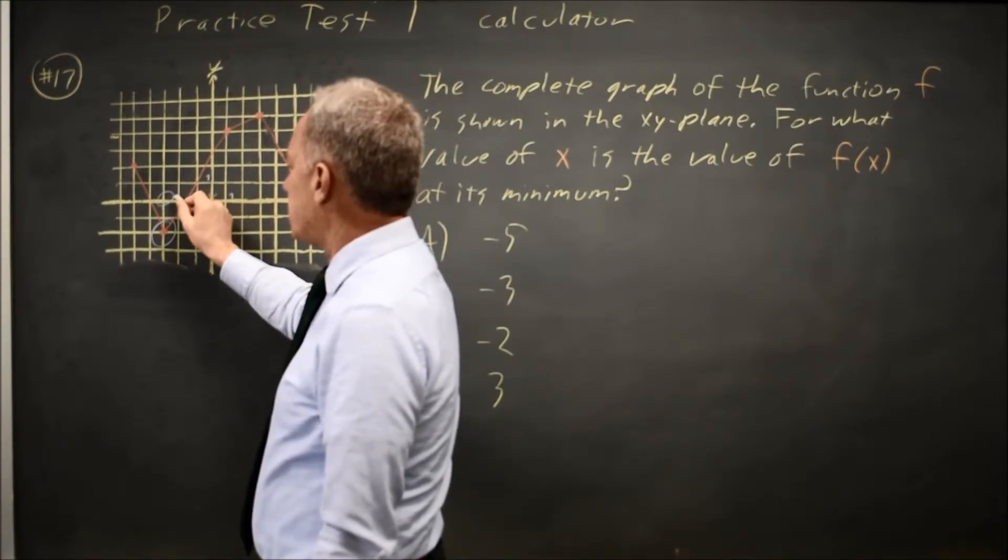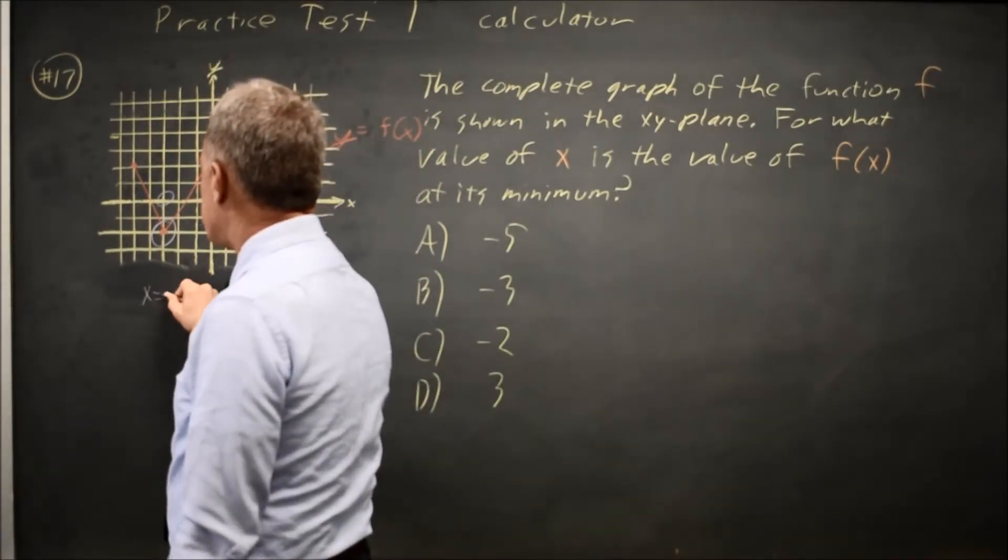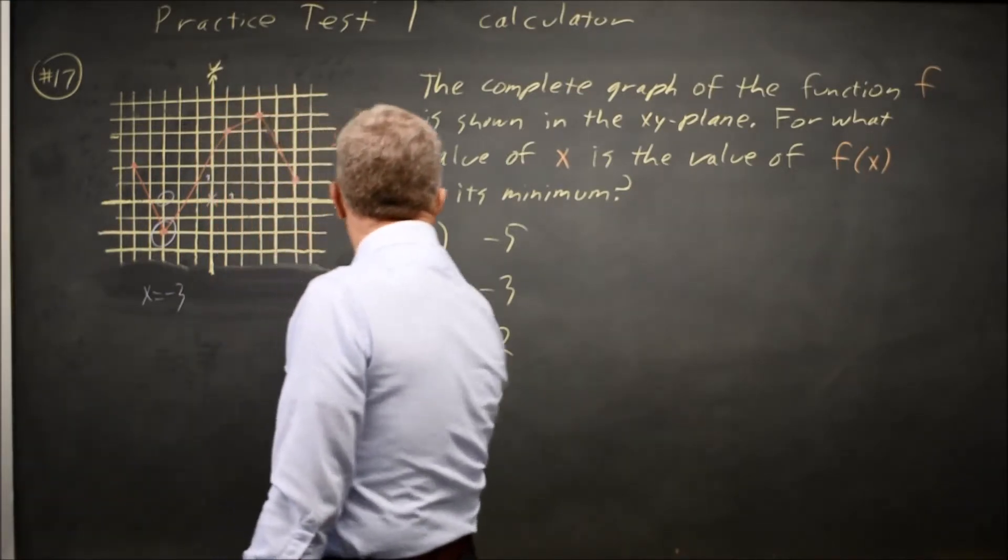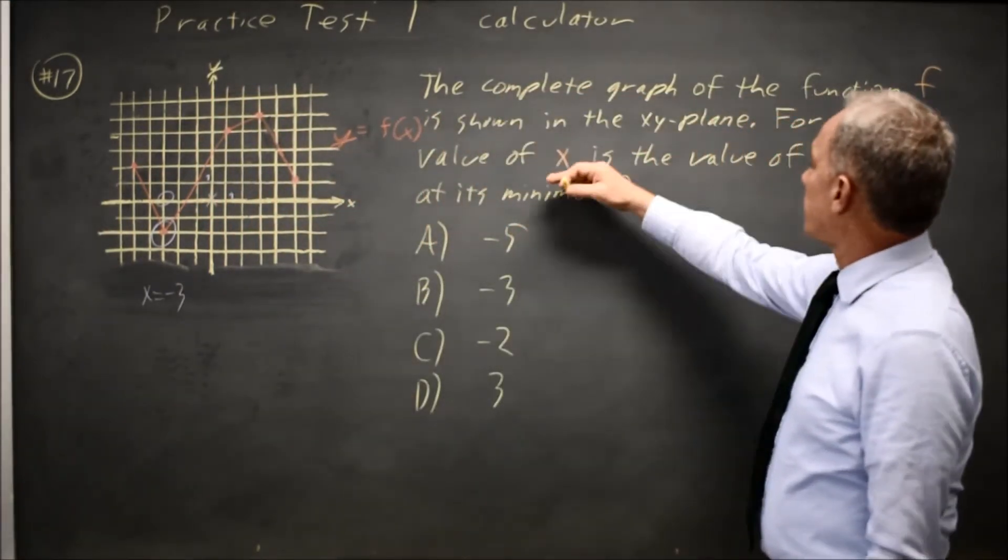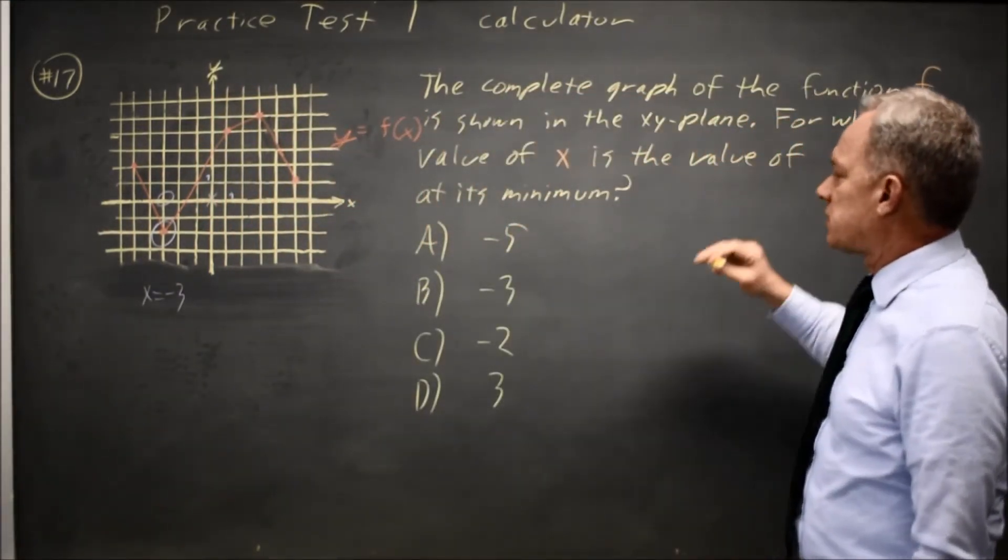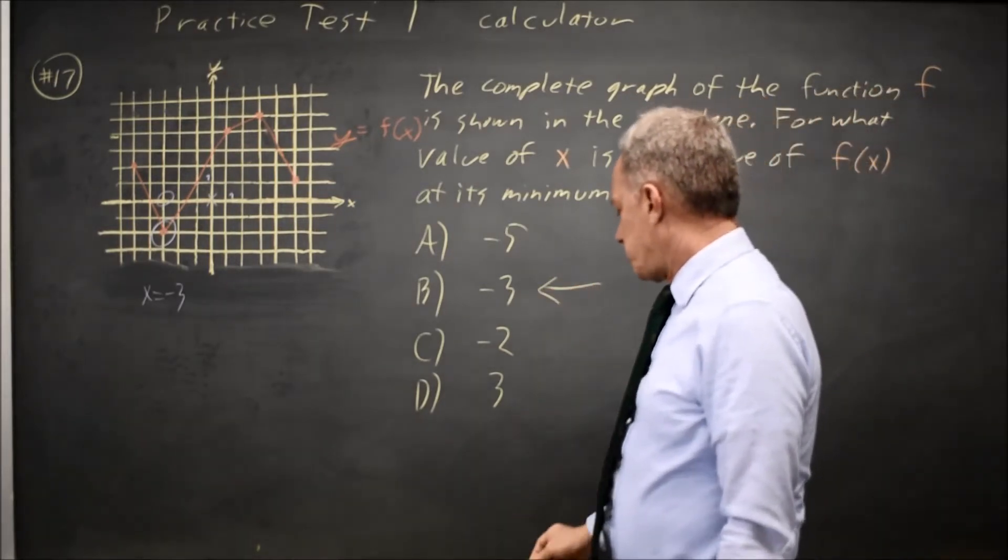That's x equals negative 1, negative 2, negative 3. x equals negative 3 is the value of x when f(x) is at its minimum. So that would be choice B.